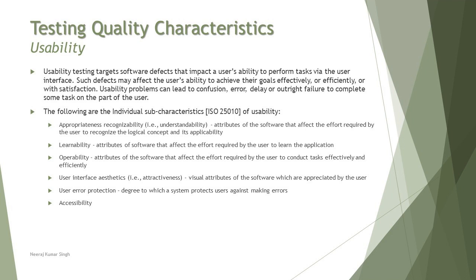Usability problems can lead to confusion, errors, delay, or outright failure to complete tasks on the part of the user. We try to ensure efficiency and satisfaction for end users. There are many sub-characteristics related to usability, such as appropriateness recognizability — how appropriate your product is to your target audience so they can recognize the logical concepts, its applicability, and work on it.